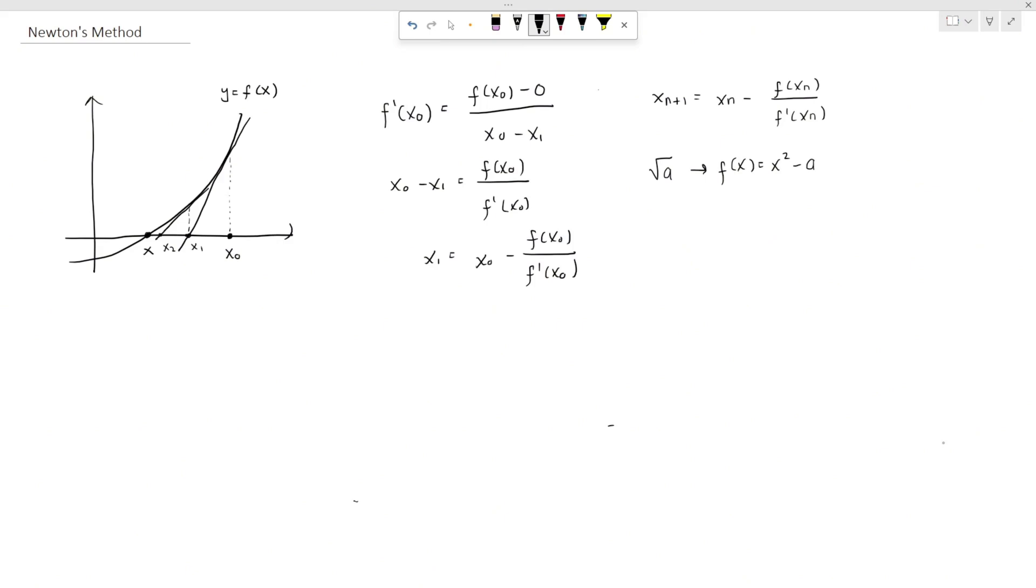We can plug in this function into the formula of Newton's method and we get xn plus 1 is equal to xn minus xn squared minus a over 2xn. Then, we get that xn plus 1 is equal to xn plus a over xn times 1 half. And you have to make sure that you don't take 0 as your initial guess, so you don't get something over 0.